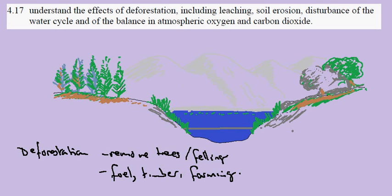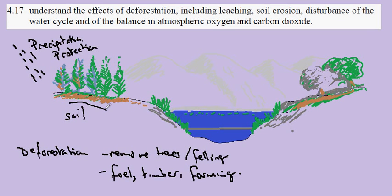When the trees are cut down, this removes the protection of the soil. The soil is then exposed to the direct effects of precipitation and as water moves across the ground we call that runoff.